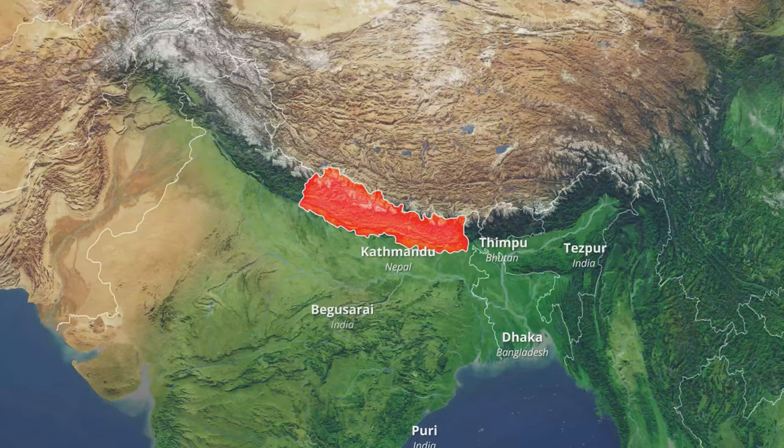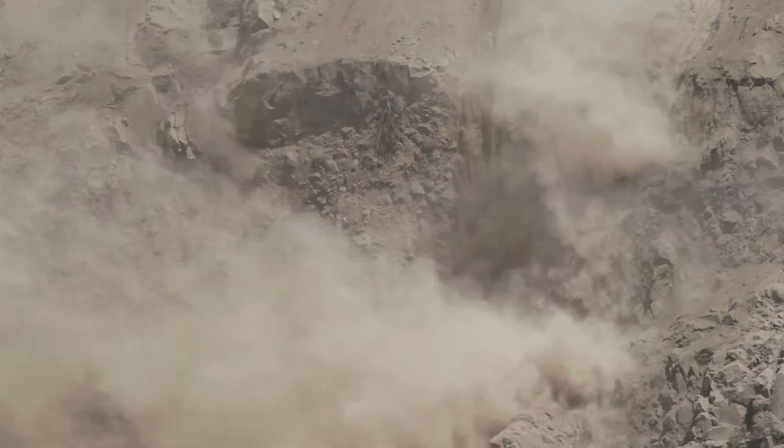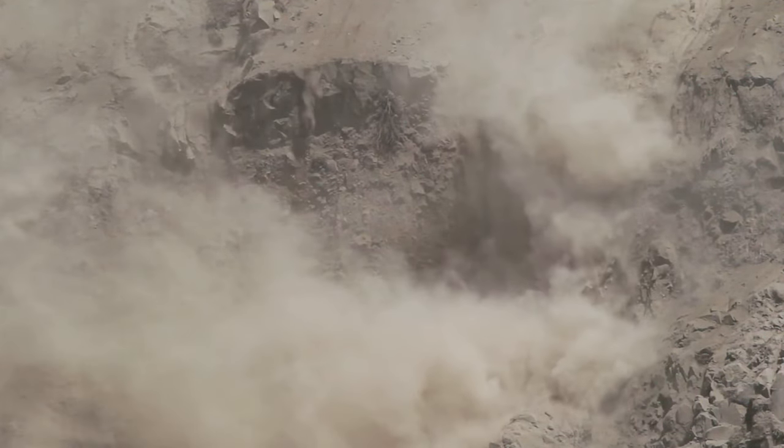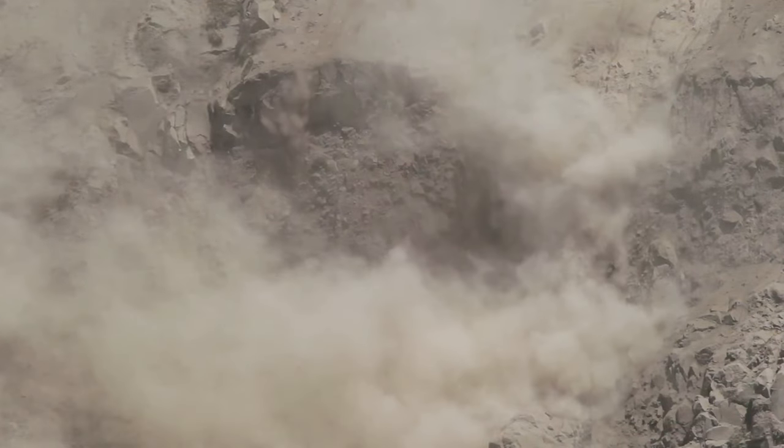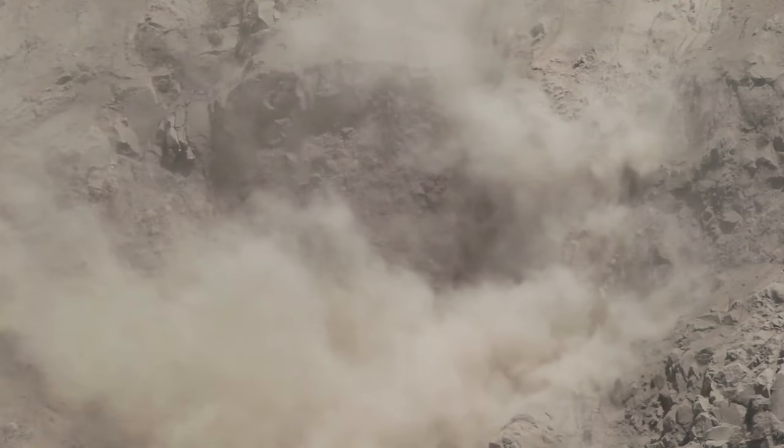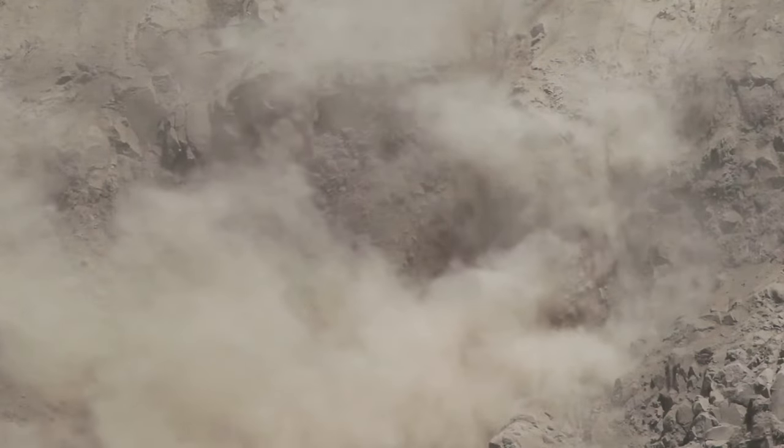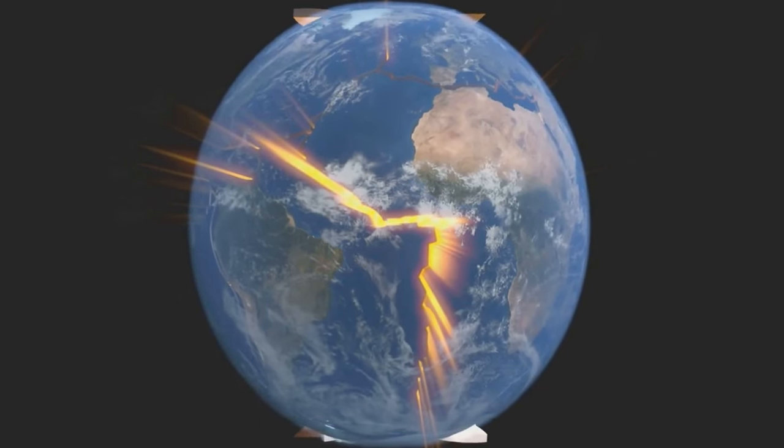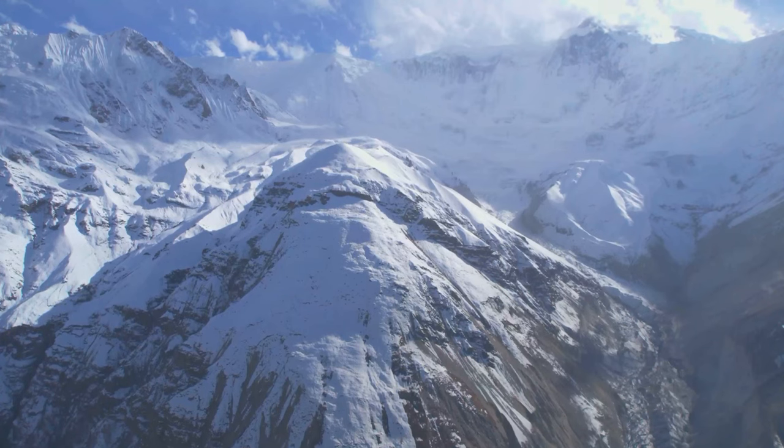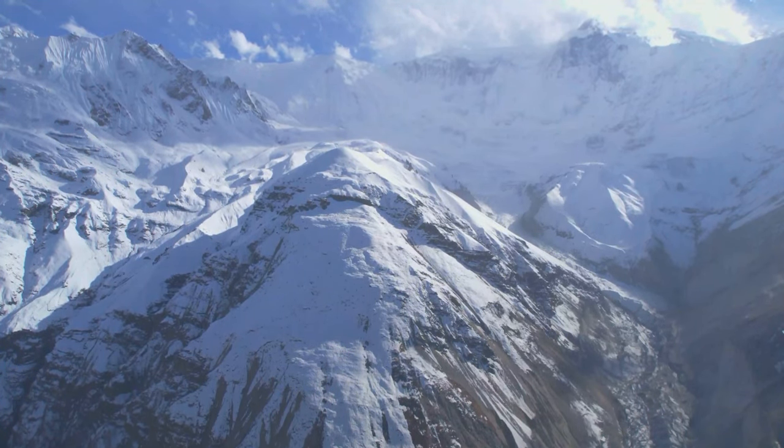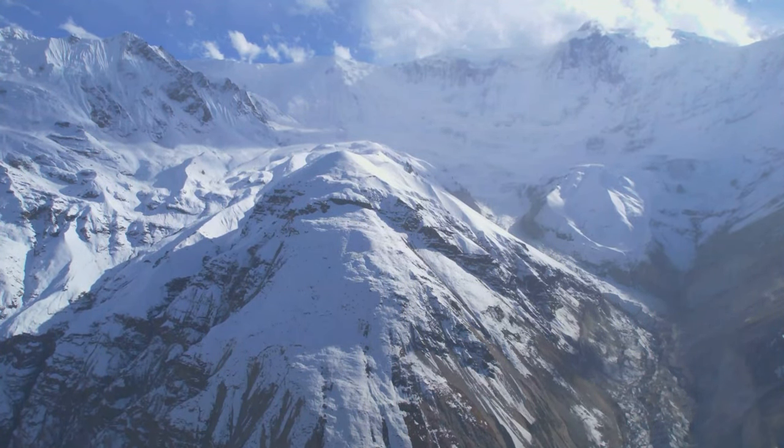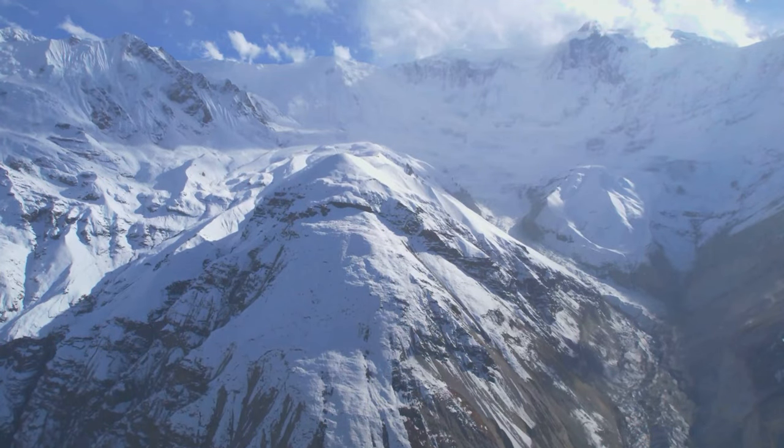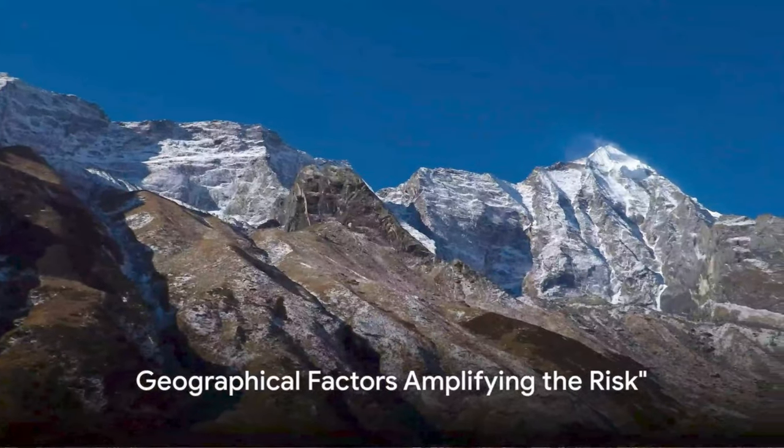Now imagine numerous lines crisscrossing beneath the land. These are active fault lines, zones where the Indian and Eurasian plates interact and stress accumulates over time. Picture these fault lines as giant tension-filled springs. When the pressure becomes too much, they spring back into shape, releasing stored energy in the process. This is an earthquake. The numerous active faults beneath Nepal are like potential time bombs, each capable of causing significant seismic events.